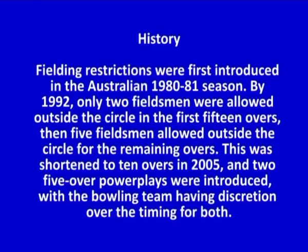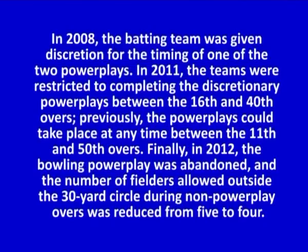Fielding restrictions were first introduced in the Australian 1980-81 season. By 1992, only two fieldsmen were allowed outside the circle in the first 15 overs, then five fieldsmen for the remaining overs. This was shortened to 10 overs in 2005 and two five-over power plays were introduced, with the bowling team having discretion over timing for both. In 2008, the batting team was given discretion for timing of one of the two power plays. In 2011, teams were restricted to completing the discretionary power plays between the 16th and 40th over. Finally, in 2012, the bowling power play was abandoned and the number of fielders allowed outside the 30-yard circle during non-power play overs was reduced from 5 to 4.